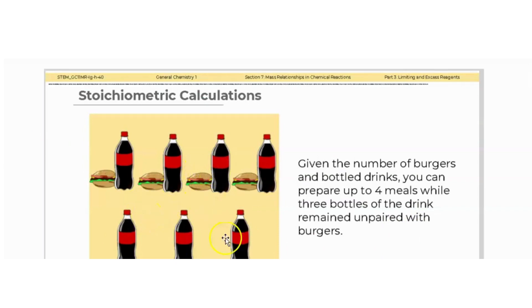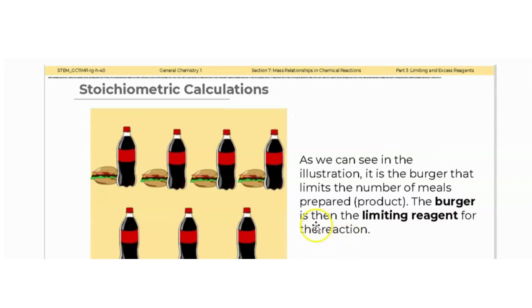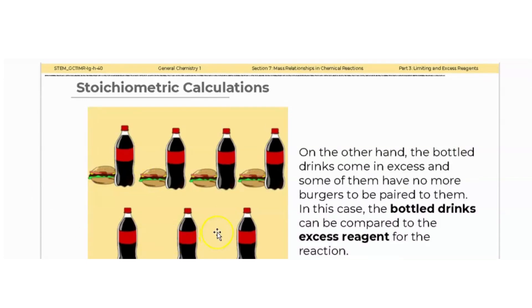Three bottles of drink remained unpaired with burgers. Comparing this example to a chemical reaction, let the burgers and bottle drinks represent the reactants and the meals be the product. It is the burger that limits the number of meals prepared — the burger is therefore the limiting reagent, as it runs out first. The bottle drinks come in excess, with some having no more burgers to pair with, so the bottle drinks can be compared to the excess reagent.